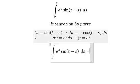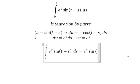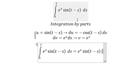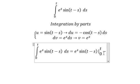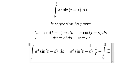So the integration by parts formula gives us u multiplied by v, and we put the bounds from zero to t, minus the integration from zero to t of u multiplied by dv. Negative and negative gives us positive.